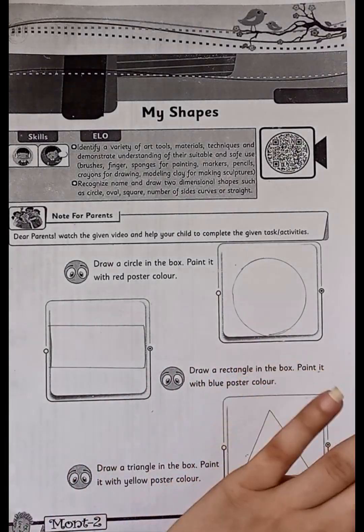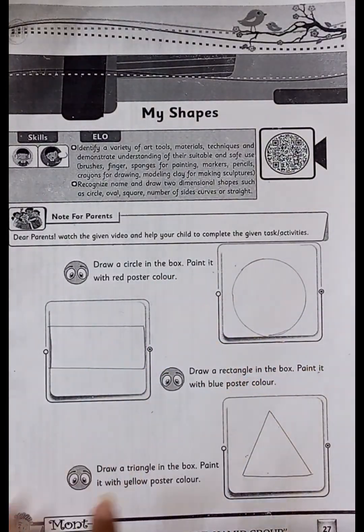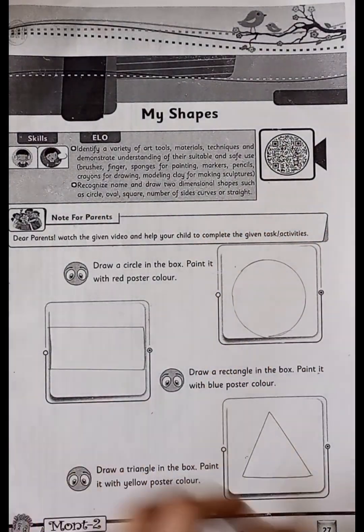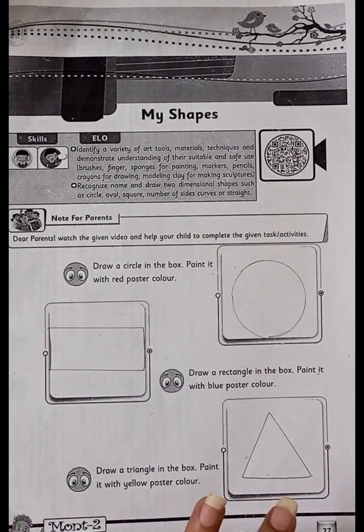This is a circle. It has no sides and no corners. It is round and round. There are no sides and no corners.